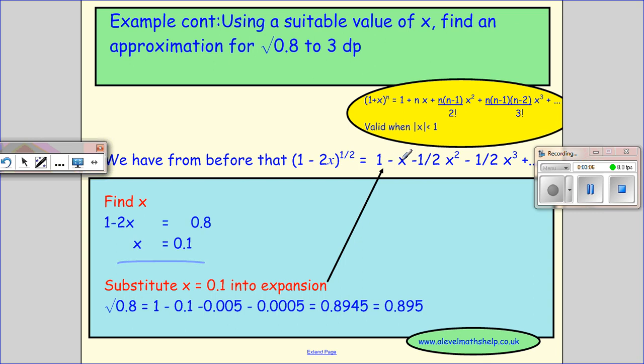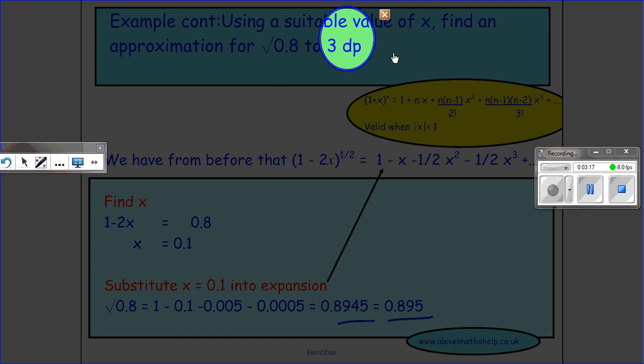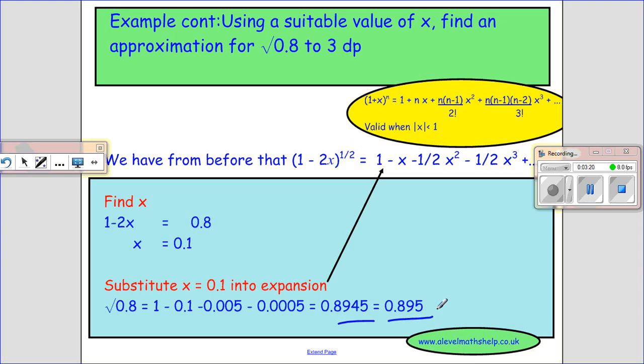So it's 1 minus 0.1 minus a half 0.1 squared minus a half 0.1 cubed. Work it out, and I give it to whatever they've asked. They've asked for three decimal places, so I will give it to three decimal places here.